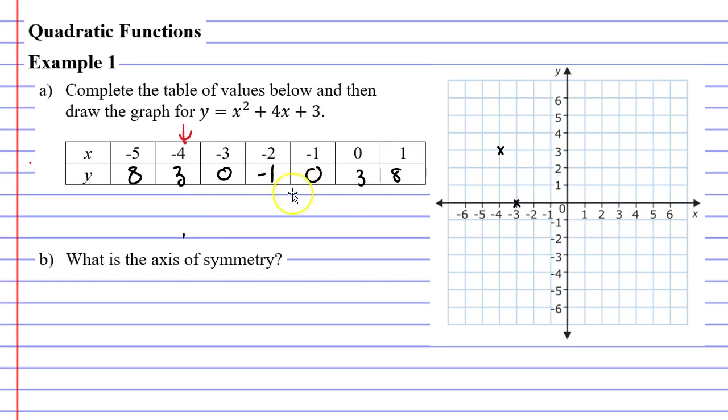When x is negative 2, y is negative 1. When x is negative 1, y is 0. That goes on the x-axis.